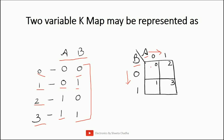Now let us start numbering the block numbers. When A is 0 and B is 0, this is block number 0. When A is 0 and B is 1, this is block number 1. When A is 1 and B is 0, this is block number 2. And when A is 1 and B is 1, this is block number 3. So this is how you will be able to draw a 2-variable K-map having variables A and B.